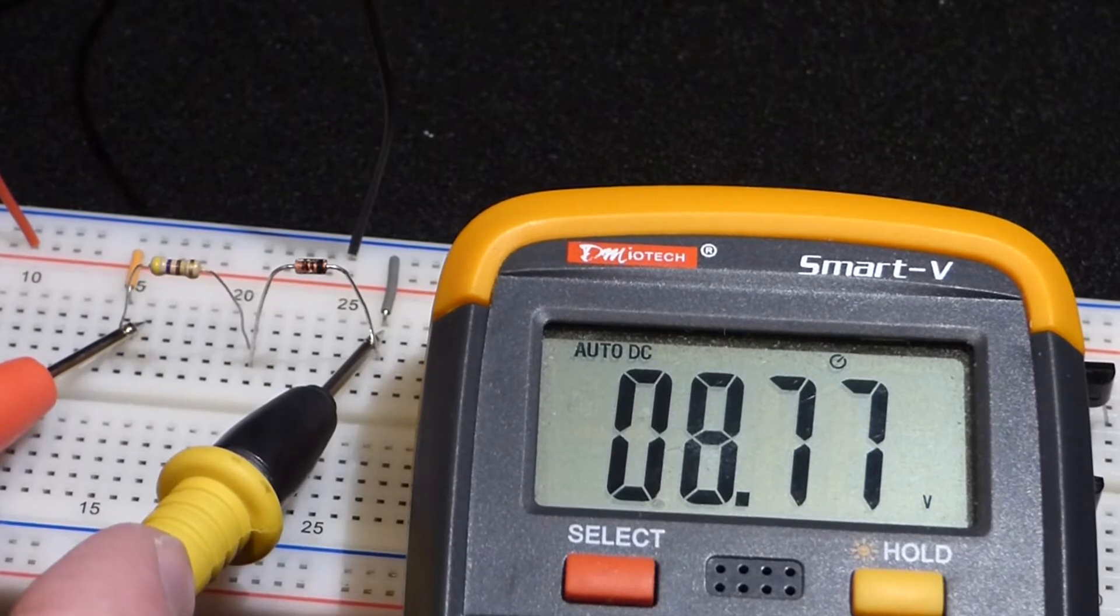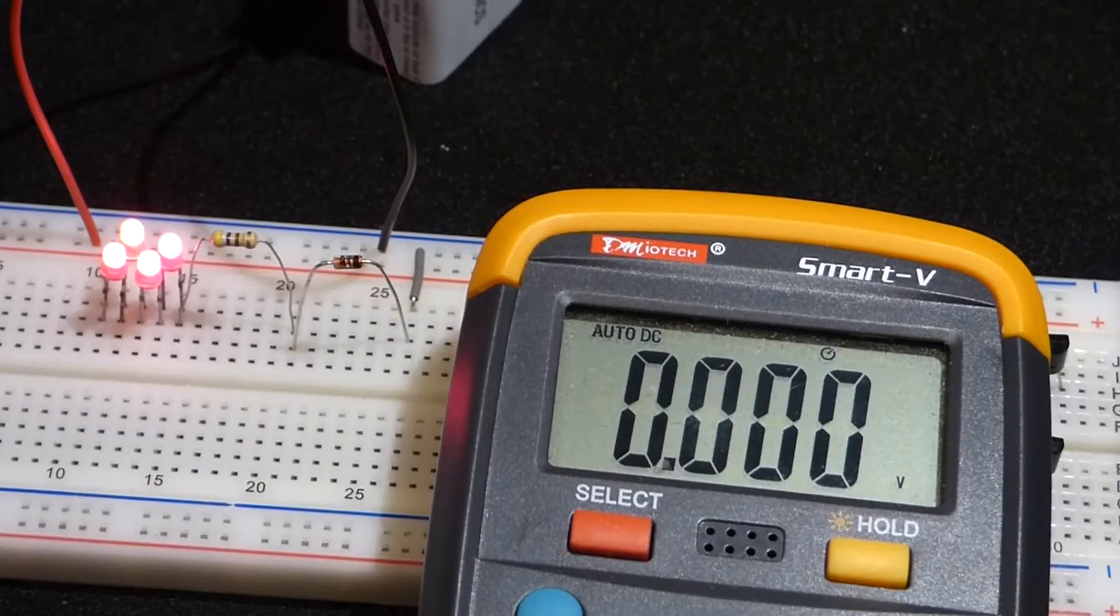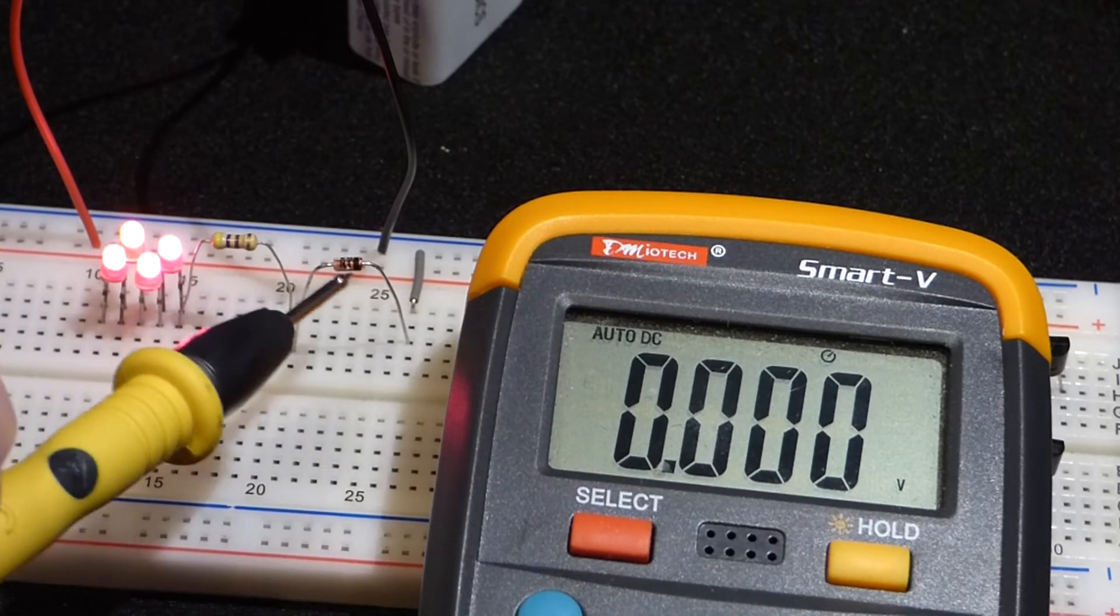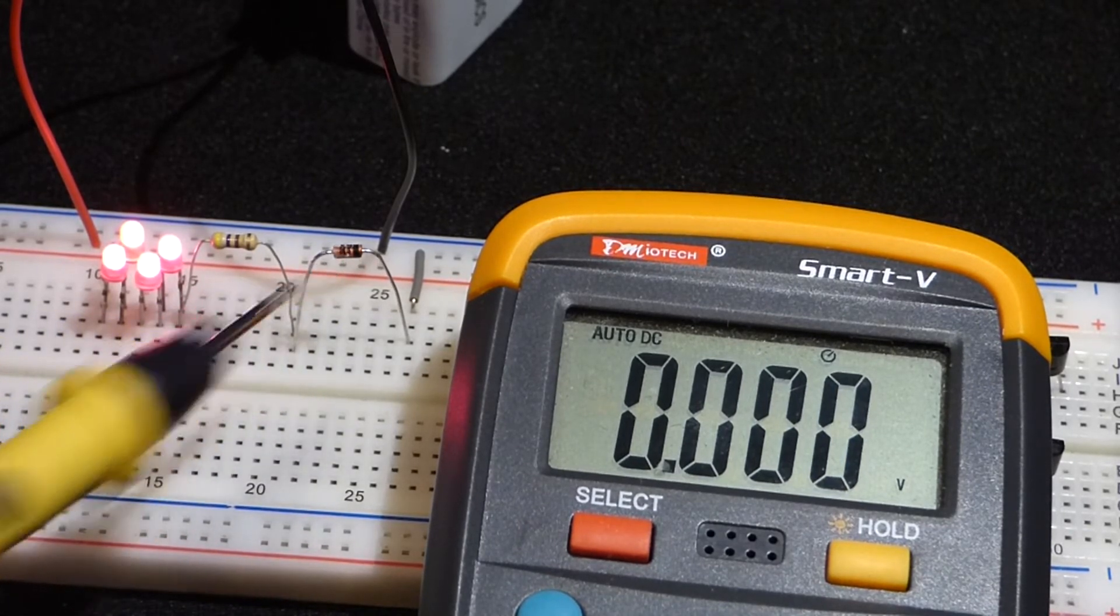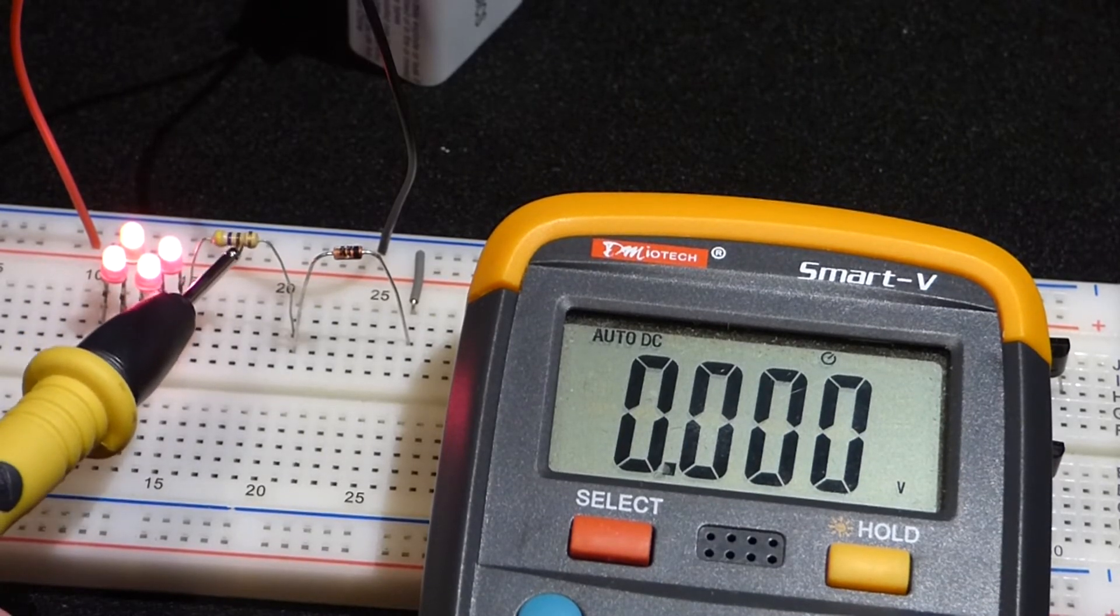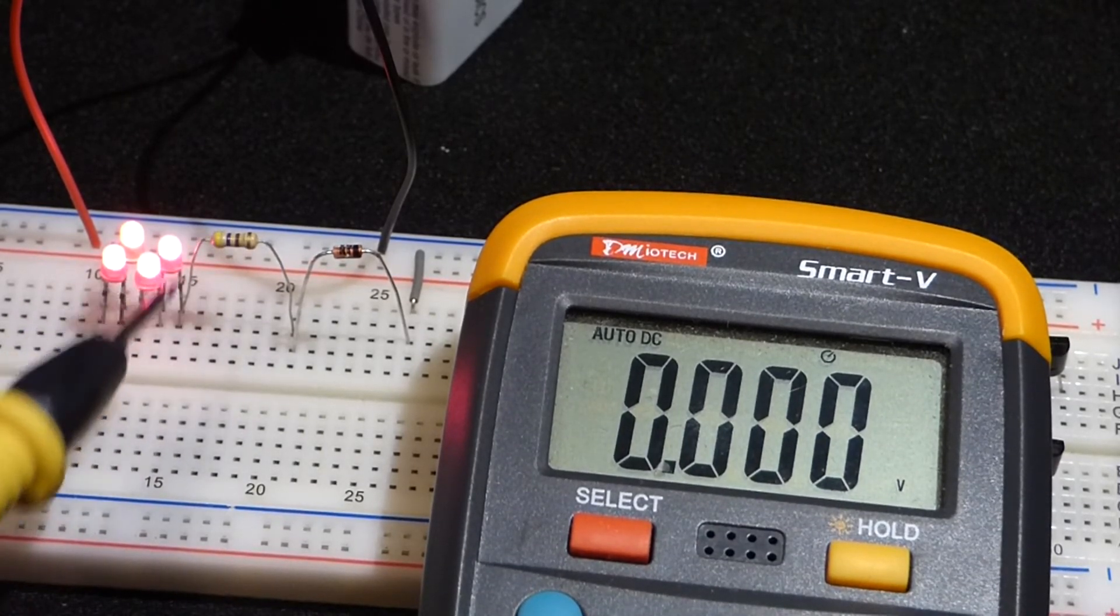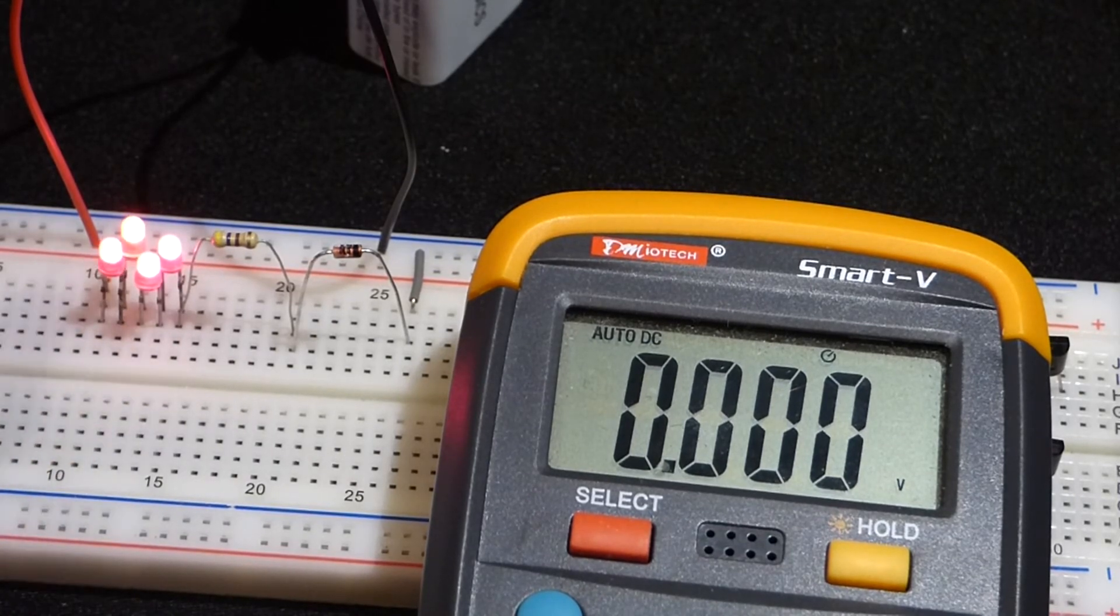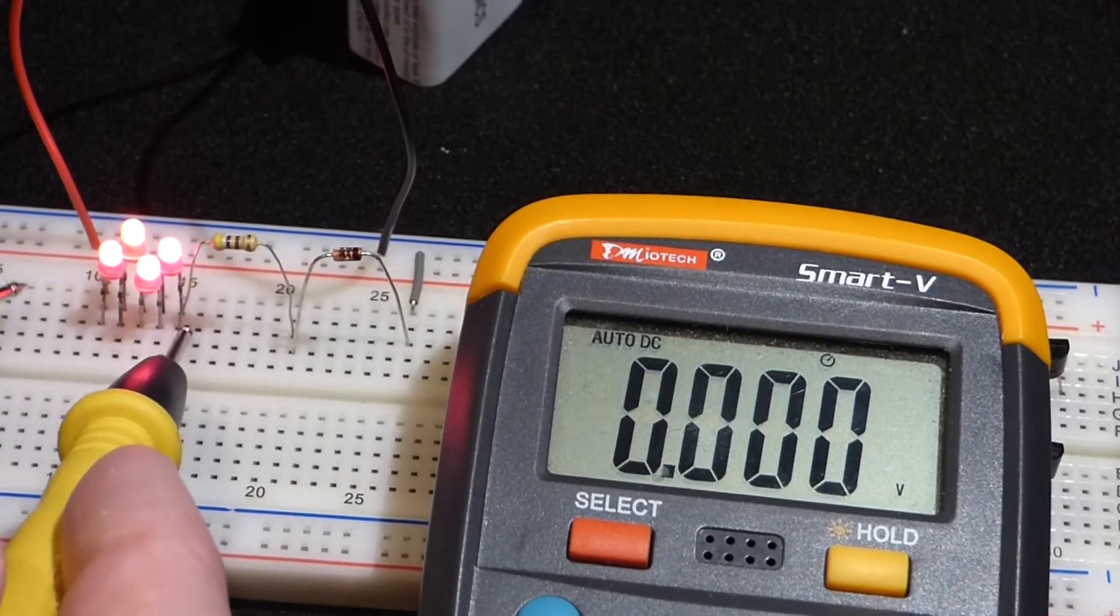Again, we're using a 9 volt power source here. So now, I wanted to drop the voltage and the current to the Schottky diode. Now, I forgot to mention, this is a 470 ohm resistor. That's a minimum value resistor you want to protect one LED from 9 volts of current.